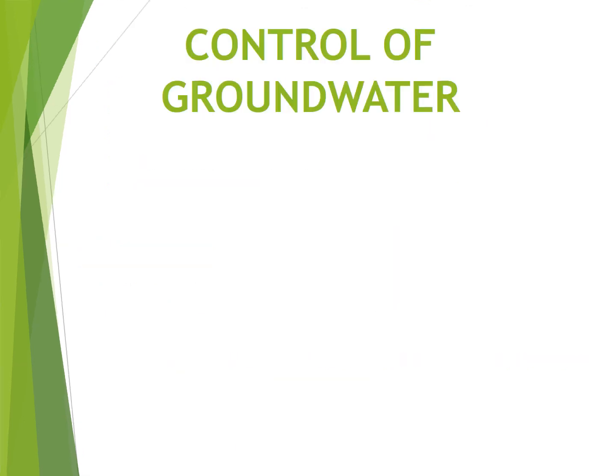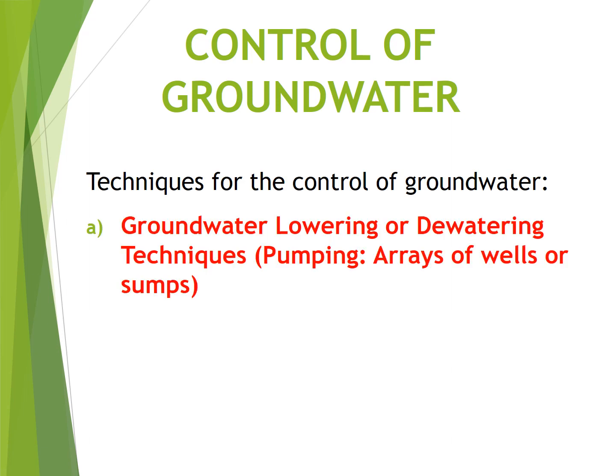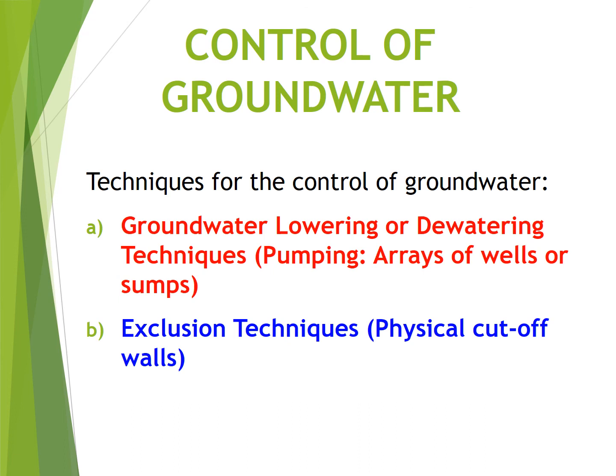Control of groundwater: There are two techniques for the control of groundwater. A — groundwater lowering or dewatering techniques, including pumping and arrays of wells or sumps. B — exclusion techniques, using physical cut-off walls. Further explanation of these techniques will be discussed in the next class.